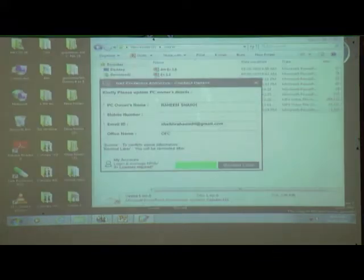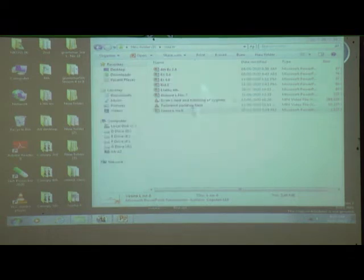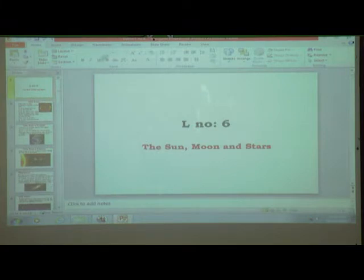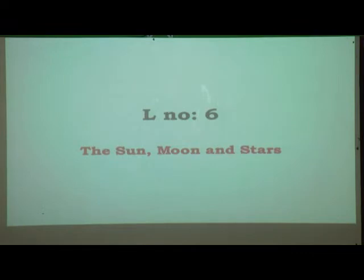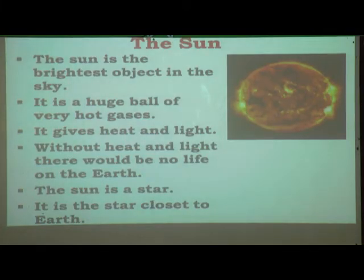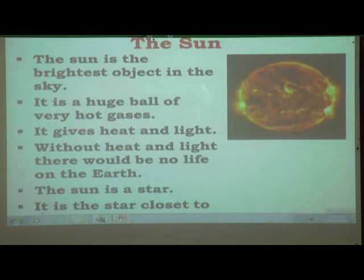Now close your canopy. Today we are going to study deeply lesson number six: the sun, moon and stars. In this chapter, we are going to study about the sun and the solar system, what constellations are, and why the moon appears to change its shape every day.